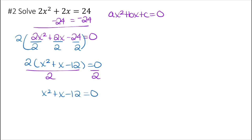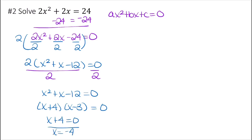You can solve this using the quadratic formula or by graphing, but I prefer factoring. This factors into x plus 4 times x minus 3 equals 0. So either x plus 4 equals 0, giving x equals negative 4, or x minus 3 equals 0, giving x equals 3. Those are the two solutions.